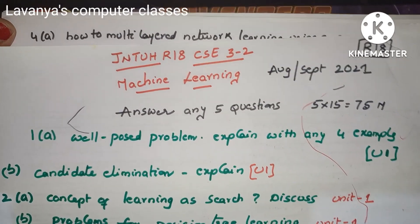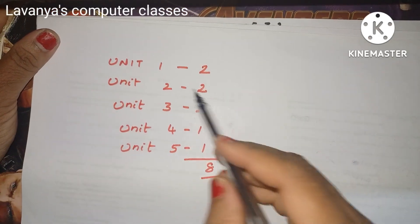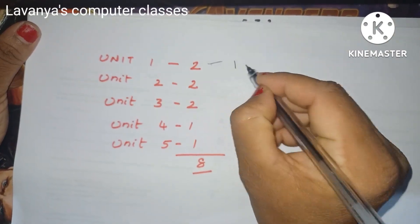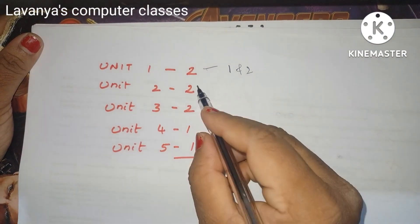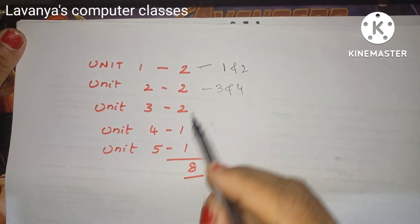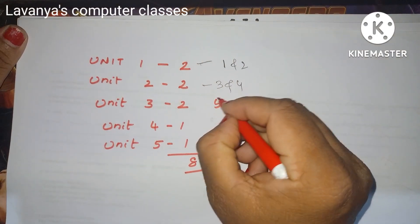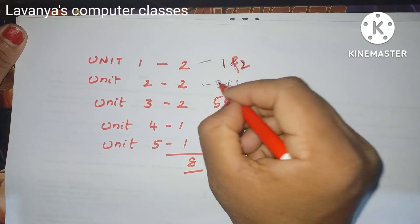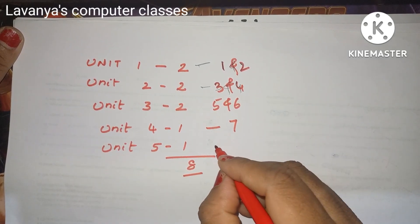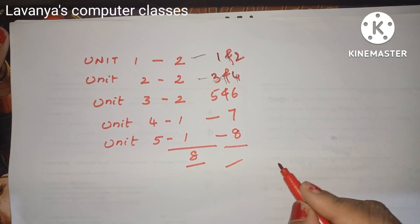To summarize the analysis of this August 2021 paper: there are 8 questions in total. Questions 1 and 2 are from Unit 1, questions 3 and 4 are from Unit 2, questions 5 and 6 are from Unit 3, question 7 is from Unit 4, and question 8 is from Unit 5. Since this is a COVID pattern, you only need to attempt 5 out of 8 questions.